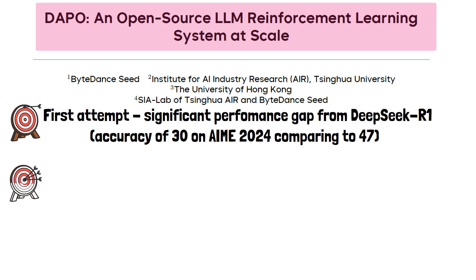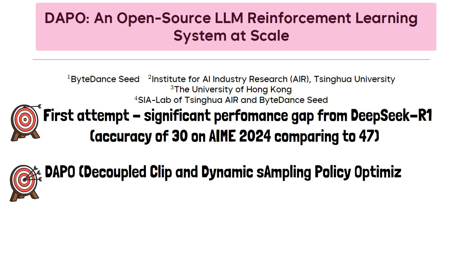In response, the paper introduces DAPO, short for Decoupled Clip and Dynamic Sampling Policy Optimization, a new reinforcement learning system that is built on GRPO. DAPO incorporates several novel techniques on top of GRPO, which we will review in this video.